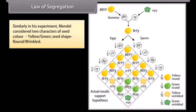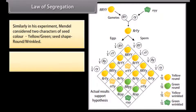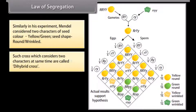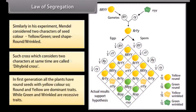Similarly, in his experiment Mendel considered two characters: seed color (yellow/green) and seed shape (round/wrinkled). Such a cross which considers two characters at the same time is called a dihybrid cross. In the first generation, all the plants had round seeds with yellow color. So round and yellow are dominant traits, while green and wrinkled are recessive traits.